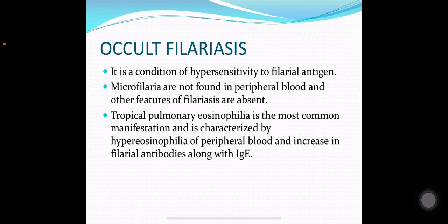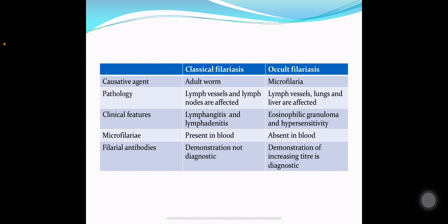Occult filariasis is a condition of hypersensitivity reaction to filarial antigens. Microfilaria are not found in the peripheral blood and other features of filariasis are absent. Tropical pulmonary eosinophilia is the most common manifestation, characterized by hypereosinophilia of peripheral blood and increase in filarial antibodies along with IgE. In classical filariasis, adult worms affect lymph vessels and lymph nodes causing lymphangitis and lymphadenitis, and microfilaria are present in blood. In occult filariasis, microfilaria are the causative agent, affecting lymph vessels, lungs and liver; eosinophilic granuloma and hypersensitivity reactions occur, microfilaria are absent in blood, and demonstration of increasing titres of antibodies is a diagnostic feature.